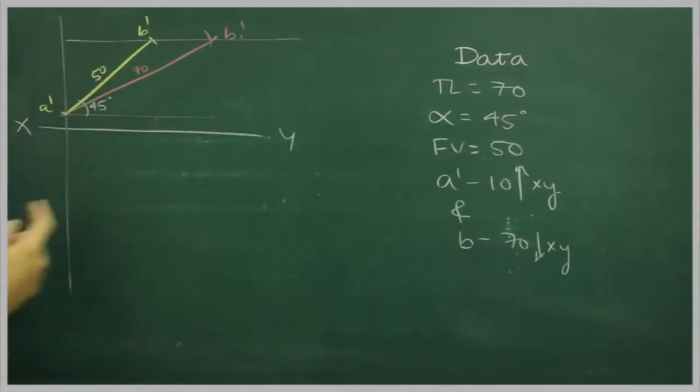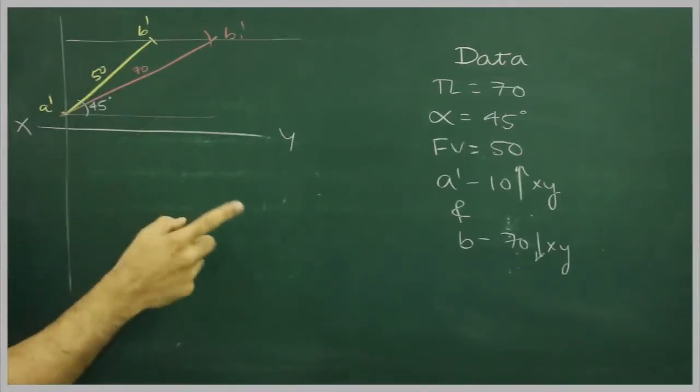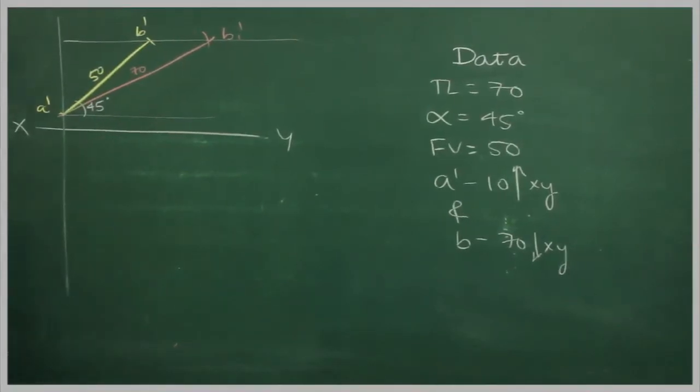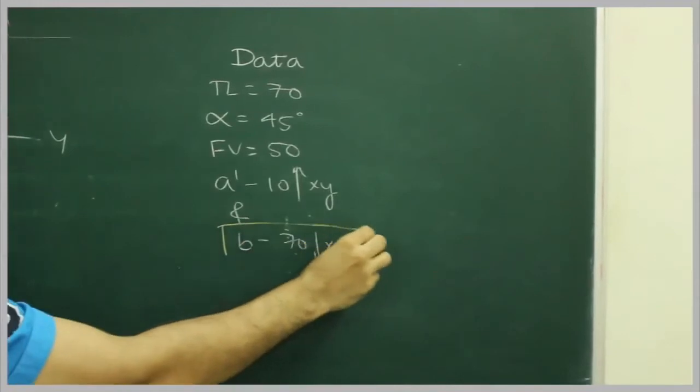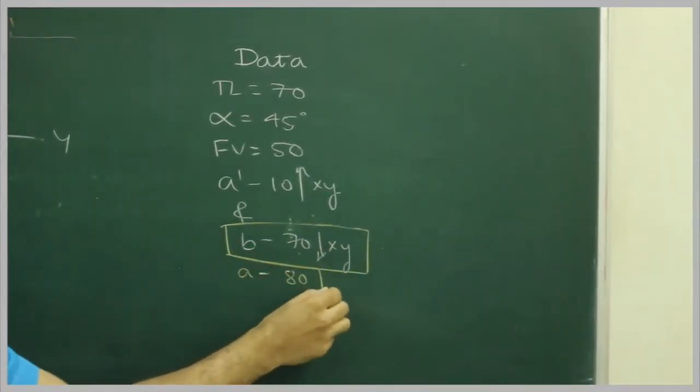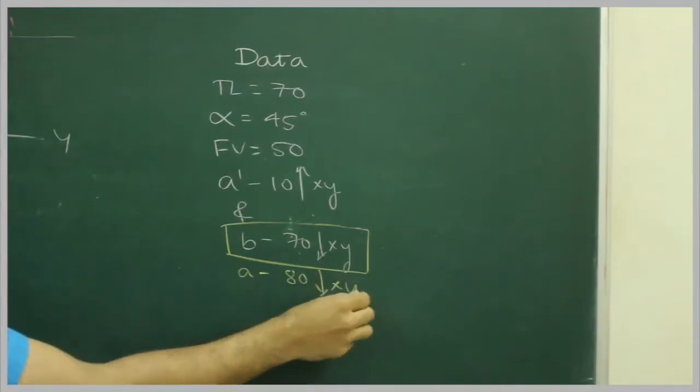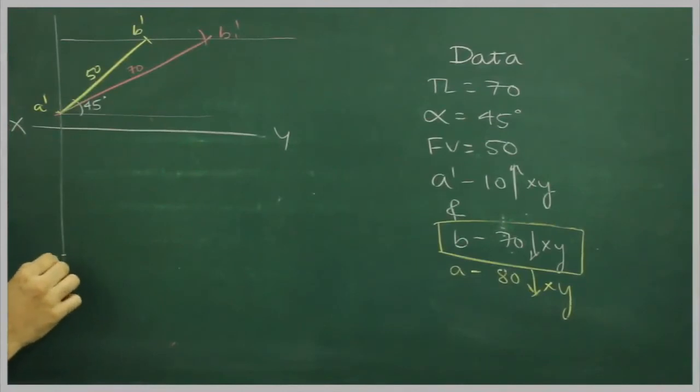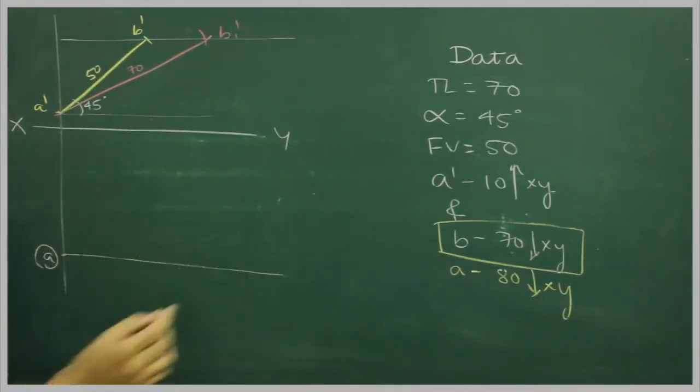Now if you see, we have given B which is 70mm in front of B, so what we can do, instead of that dimension, we can assume A which is 80mm below xy line. So I will take A 80mm below xy line, and I will draw a horizontal line.